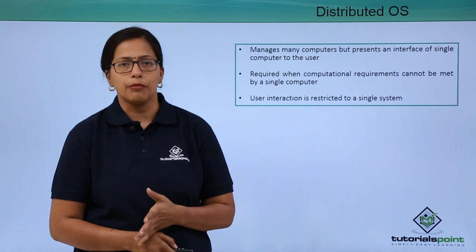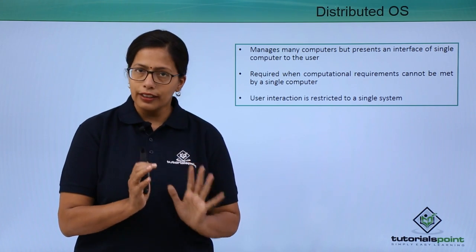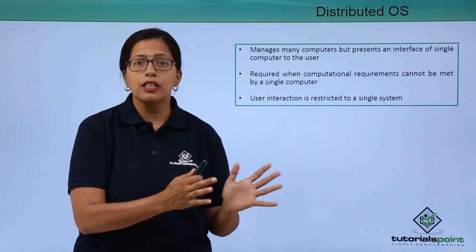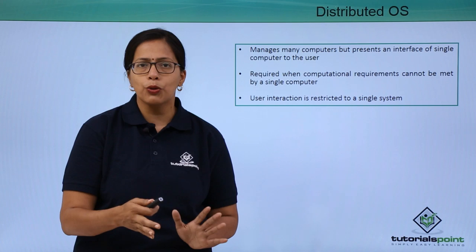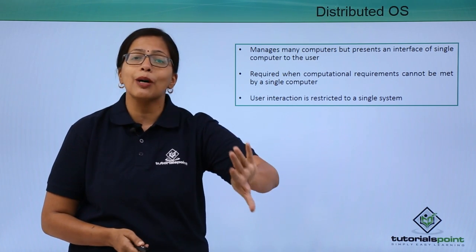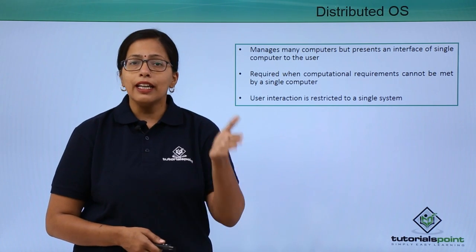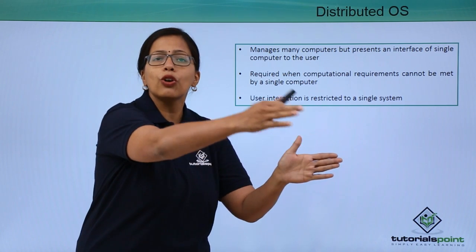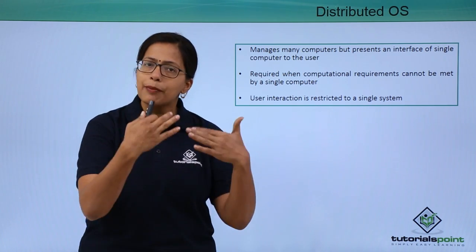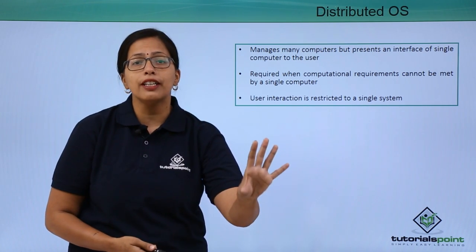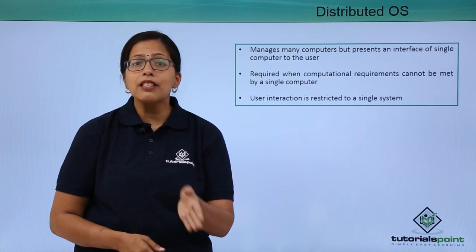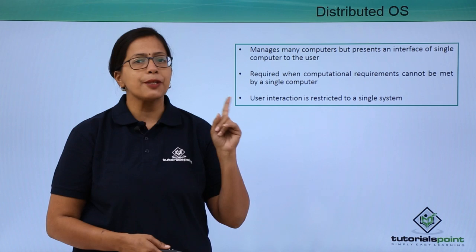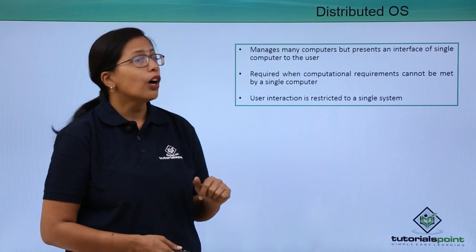Then we have a distributed operating system. The whole world is connected through a network, and our processing requirements have increased because we are doing many jobs that need specialized software and operating systems. If I have a system but cannot store the complete software on it, the operating system can distribute that software into different parts and store them on different computer systems across the network. But as a user, I will feel that the software is loaded on a single system — my system. We need a very specific type of operating system for that, called the distributed operating system.